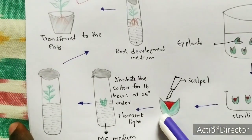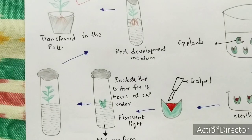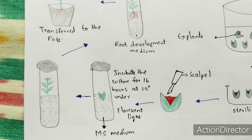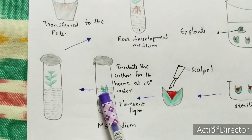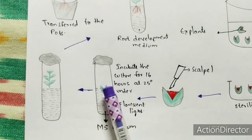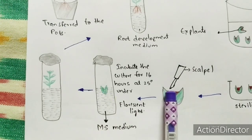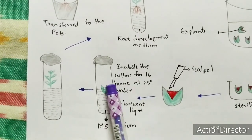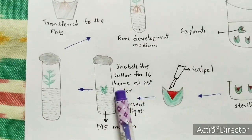The remaining apex or explant is transferred into MS medium — Murashige and Skoog medium, named after its discoverers. It is transferred into a test tube containing MS medium, and the culture is incubated for 16 hours at 25 degrees Celsius, exposed to fluorescent light.